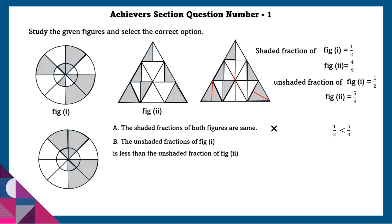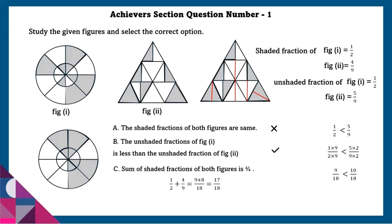As we can see, 5 by 9 is greater than a half and 1 by 2 is a half. We can verify: 9 by 18 is less than 10 by 18, so this statement is correct. Even though we know option B is correct, let us check option C — sum of shaded fractions of both figures is 3 by 4. If we check it, we will not get 3 by 4, so this is also wrong.